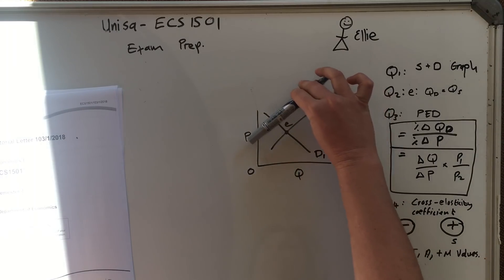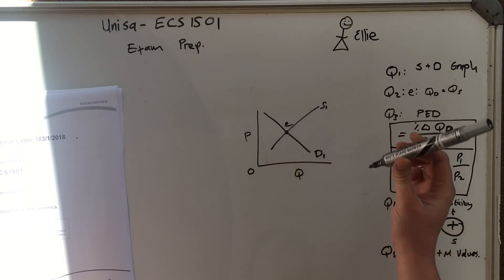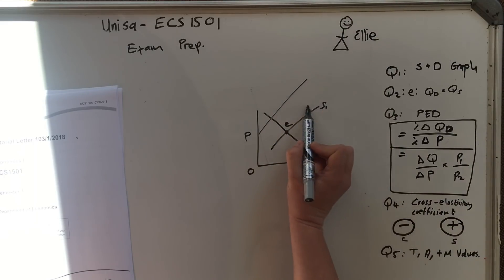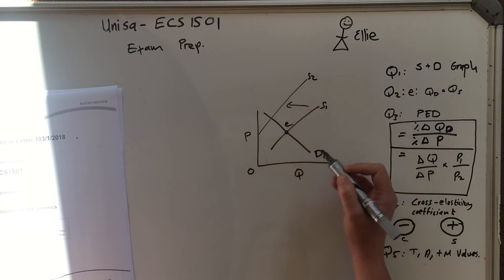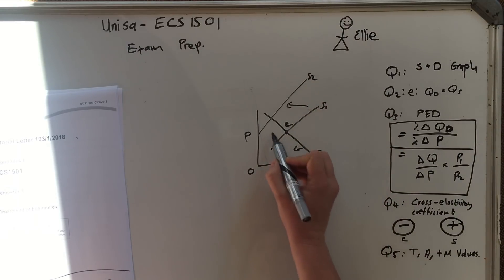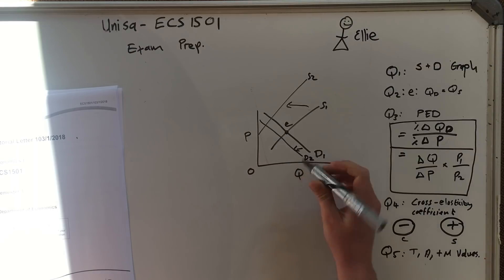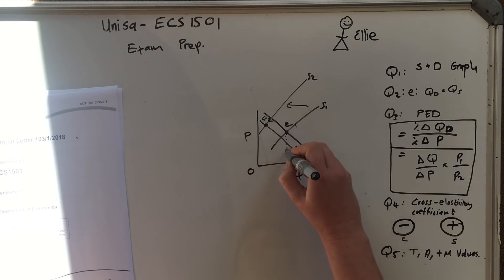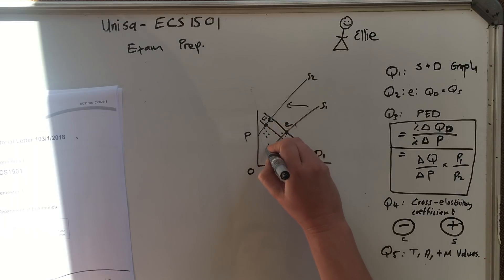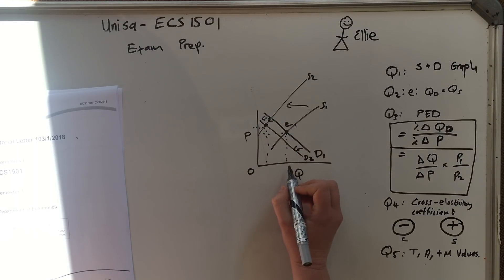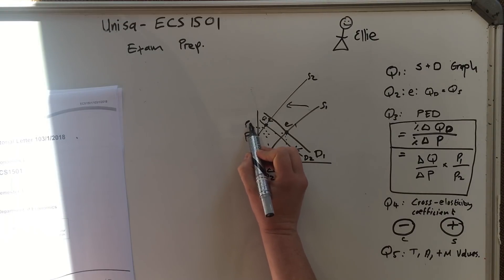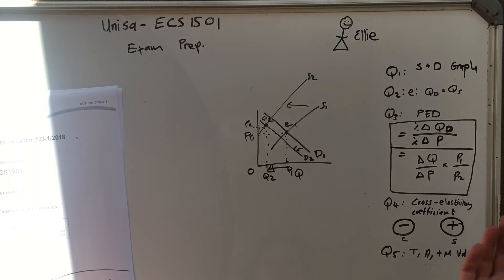Then the demand will either get less, which moves left, or get more, which moves right. The supply will either get less or get more. In the case of the tutorial letter, supply is less so it moves left and becomes S2; demand is also less so it moves left and becomes D2. Taking D2 and S2 gives you E2, your new equilibrium. Remember to make the dotted lines to P and Q — you get marks for this.